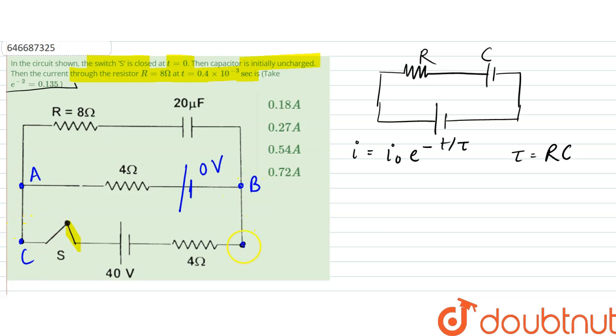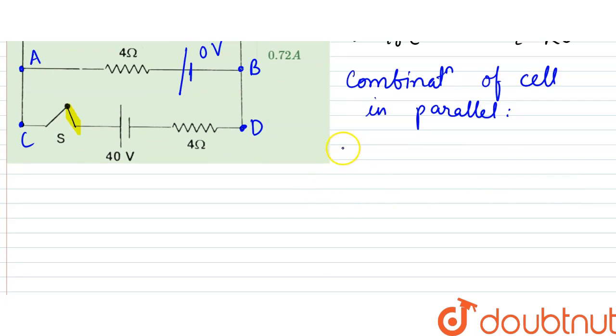this point is B and this point is D. So combination of cell in parallel condition, combination of cell in parallel situation is given by that is EMF or E equivalent. And simply we can write